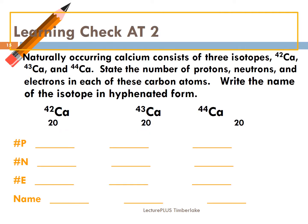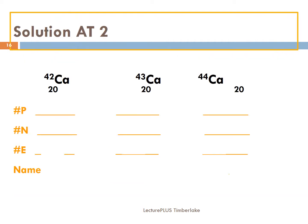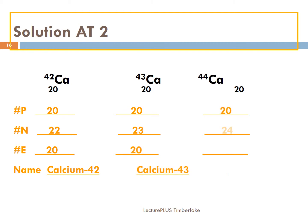Try this one: calcium-42, calcium-43, and calcium-44. Check your work. You should have 20, 22, and 20 for calcium-42; 20, 23, and 20 for calcium-43; and 20, 24, and 20 for calcium-44. Again, the only thing that changes is the neutrons, each one by one, so the mass changes from 42 to 43 to 44.